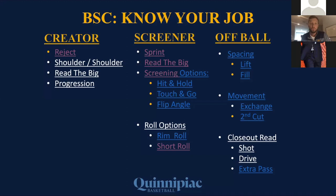The escape dribble, creating space, moving the ball, and then going to play four-on-three with ball reversal against closeouts — that's our formula. Our creator's job is to look to reject and set it up, come off shoulder-to-shoulder reading the big, and go through his progression. Our screener creates separation sprinting in, reads his own man, and his screening options are hit and hold, touch and go. We talk a lot about angles especially against teams that force direction. Off the ball, we call specific movements — lifting out of the corner, filling from the slot to the top of the key — giving our ball handler as many options as possible.